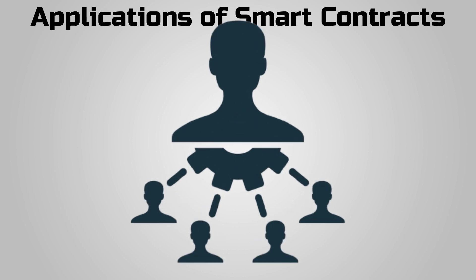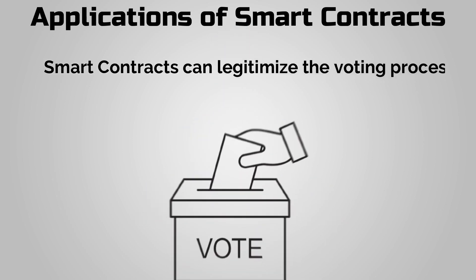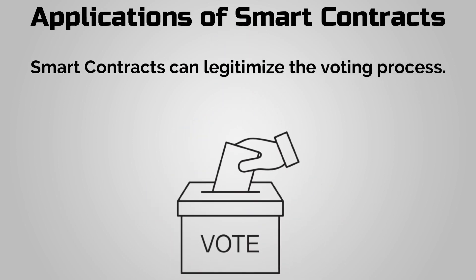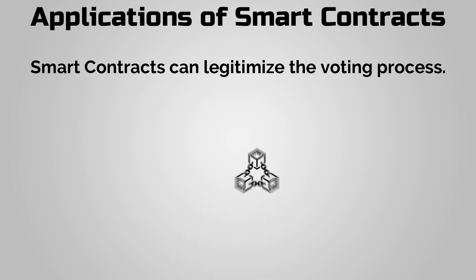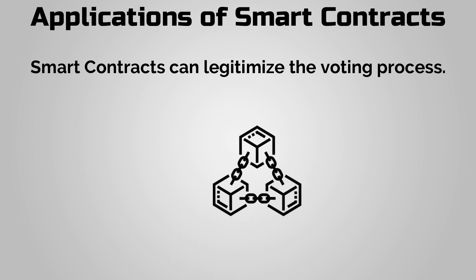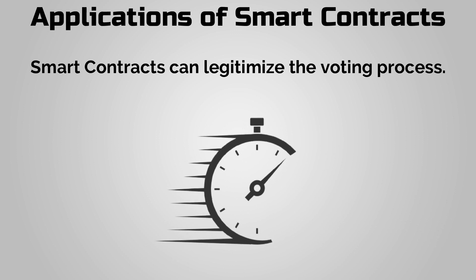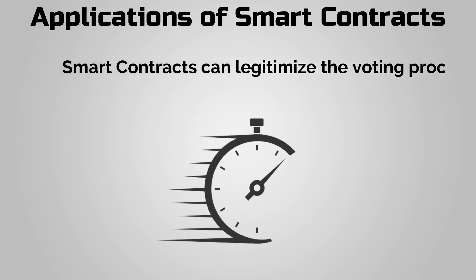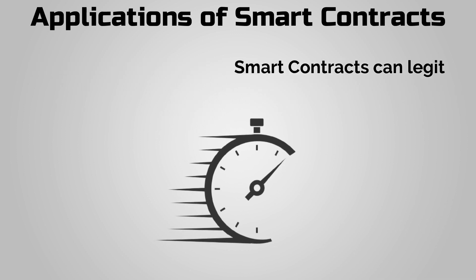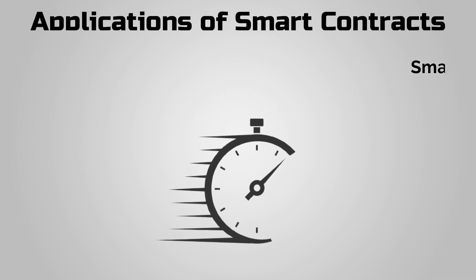Smart contracts can legitimize the voting process, making it less vulnerable to manipulation by recording the process on a blockchain. It can also make the process faster by eliminating the need for long queues and manually filling forms, thereby increasing voter turnout.